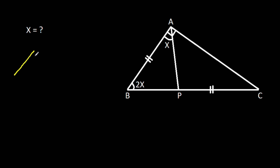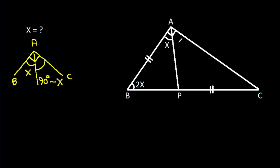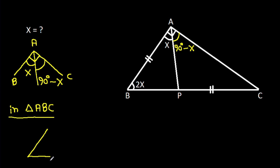Angle BAC is 90 degrees and angle BAP is x. So angle BPA will be 90 degrees minus x. In triangle ABC, angle BAC is 90 degrees.